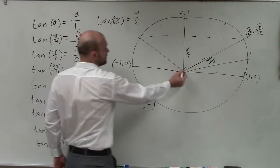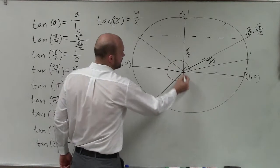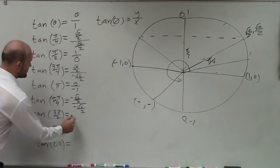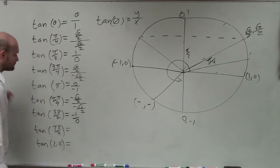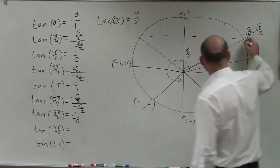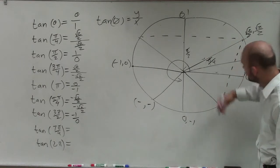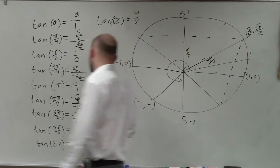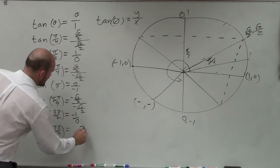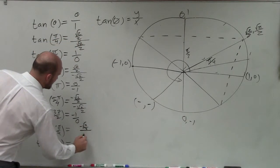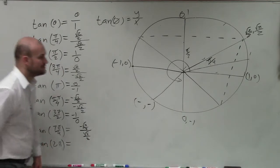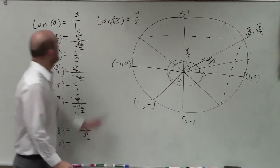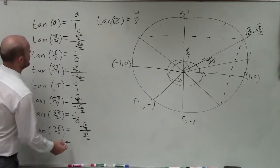For 3 pi over 2, that's halfway around the circle, which gives us 0 over negative 1, so that would be negative 1 over 0. For 7 pi over 4, that's the same reflection of pi over 4 but now in the fourth quadrant, so only the y coordinate is negative — negative square root of 2 over 2 divided by square root of 2 over 2. And the tangent of 2 pi is the exact same thing as 0, so that's 0 over 1.